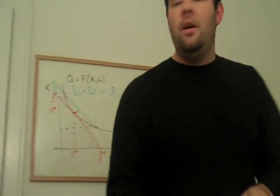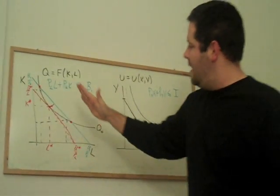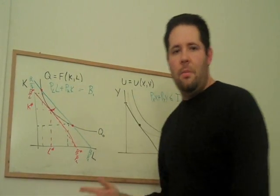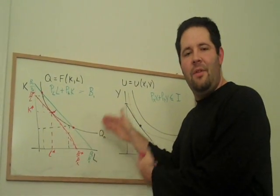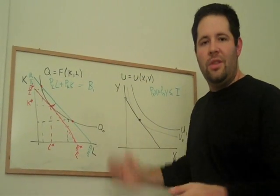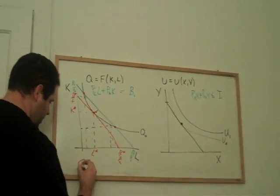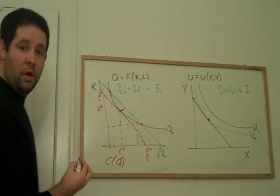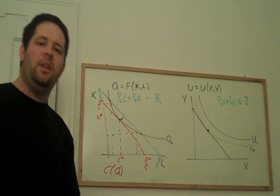And so we can think about, for each quantity, we can think about a different optimal budget. We can think about the minimum cost way of attaining any given quantity. And what that'll give us is something called the cost function. And it's a function of quantity.